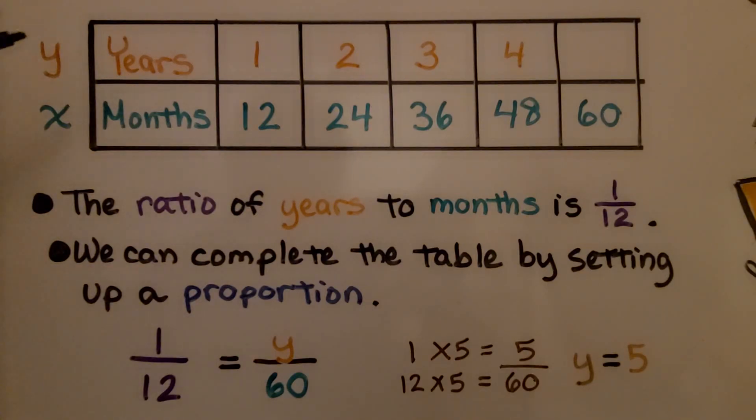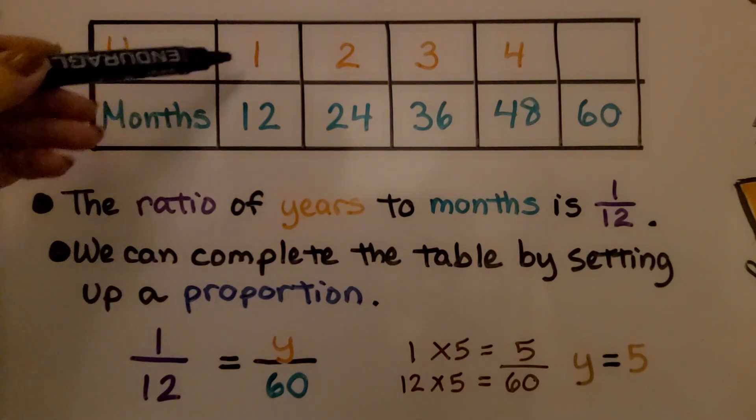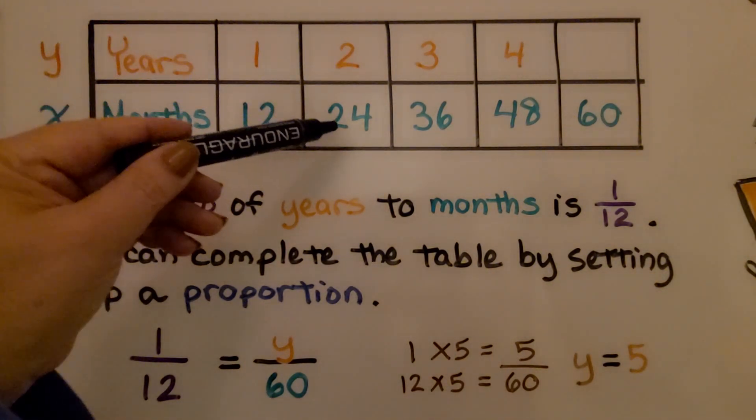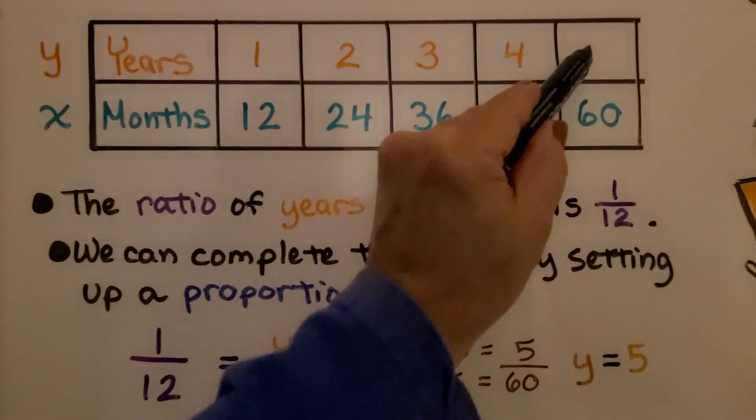Here we have a table, and it's showing years to months. 1 year is 12 months, 2 years 24 months, and so on. But we're missing this one.